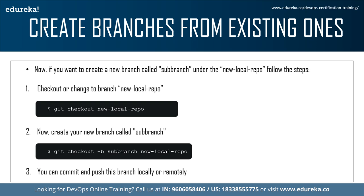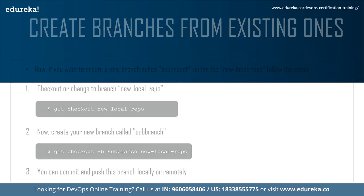If you want to create a new branch called sub-branch under the branch named new-local-repo, follow these steps. First, check out to the branch: git checkout new-local-repo. The checkout keyword switches branches. Second, create the new branch using: git checkout -b sub-branch new-local-repo. This creates sub-branch under new-local-repo; specifying new-local-repo isn't mandatory since HEAD is currently pointing to it. After working on sub-branch, you can commit, push, or merge it locally or remotely as you would any other branch.